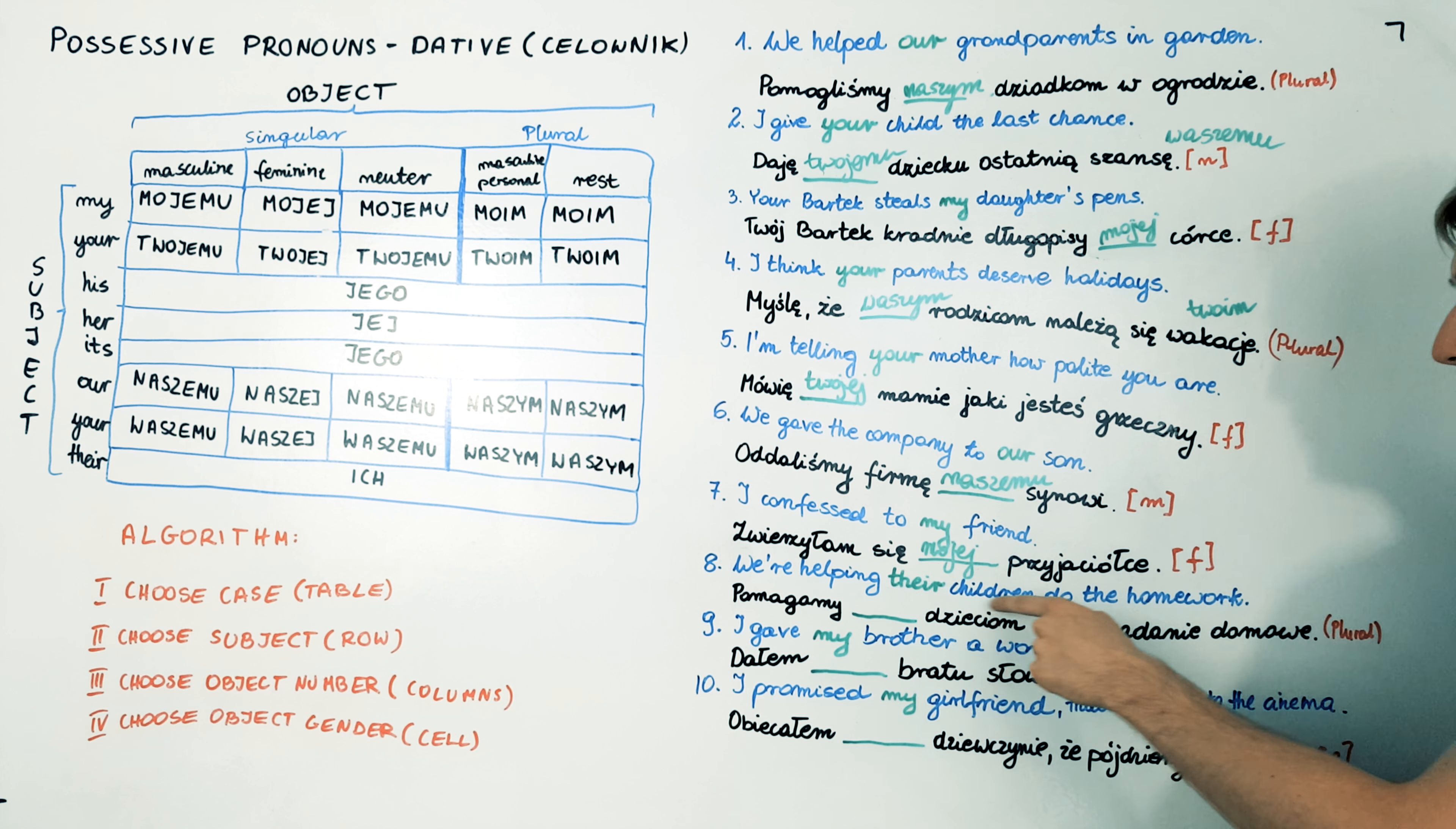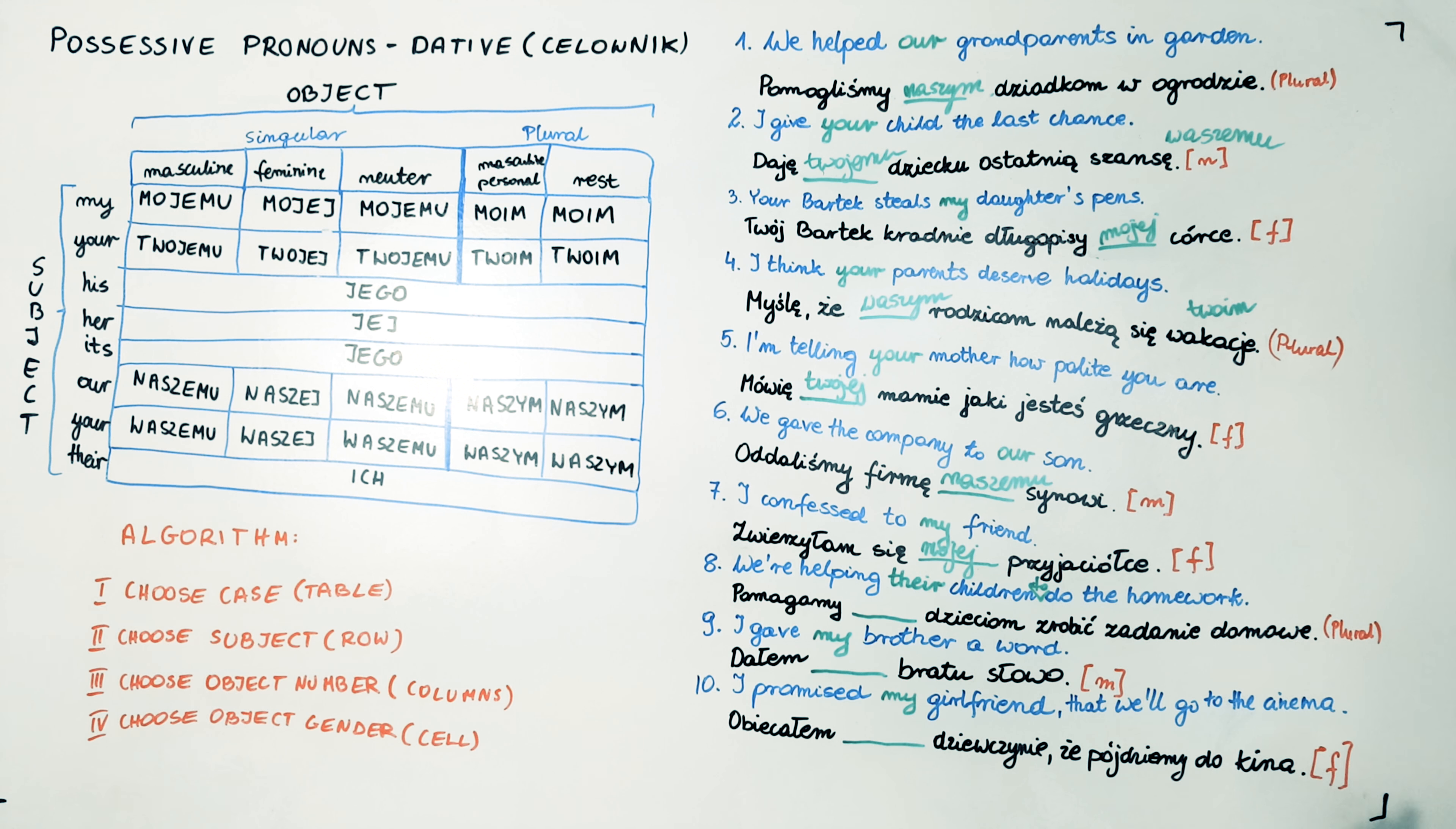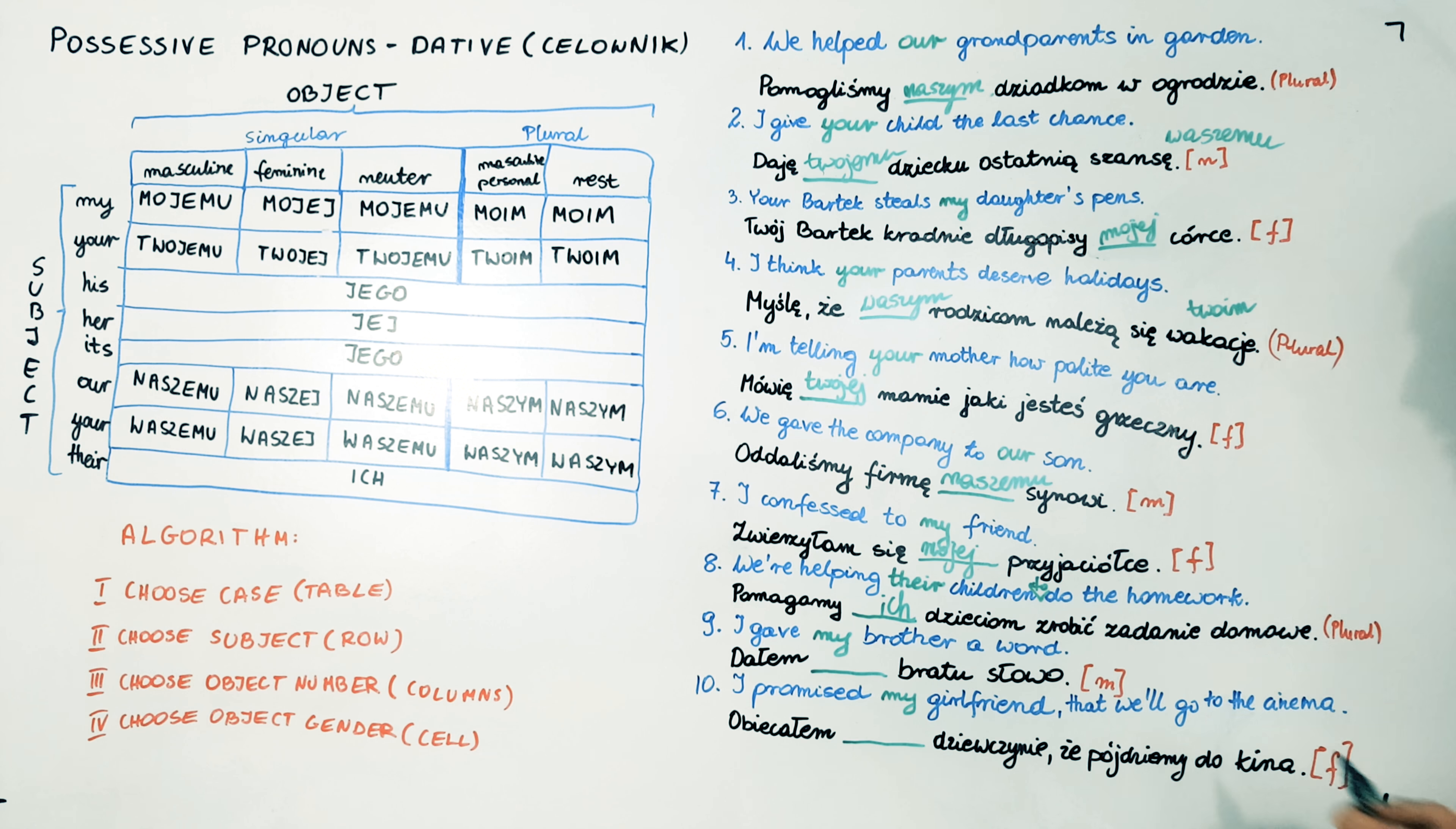We are helping their children to do the homework. So in Polish it will be Pomagamy ich dzieciom zrobić zadanie domowe. So this example is easy. It's always ich. Try the next one.